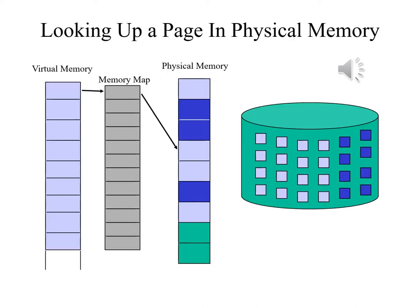The most common form of virtual memory system is demand paging, and that's what you will see on the next few slides. There are two processes in physical memory — one shown in light blue, the other in dark blue. The green frames belong to a third process, whose pages are not shown on Backing Store.